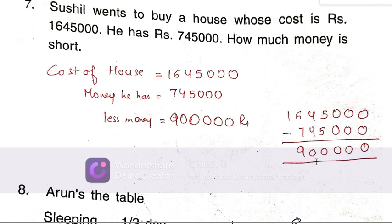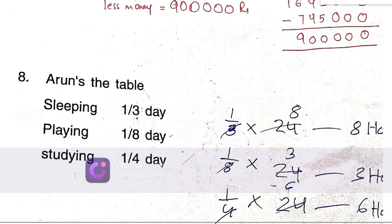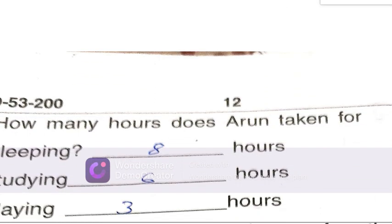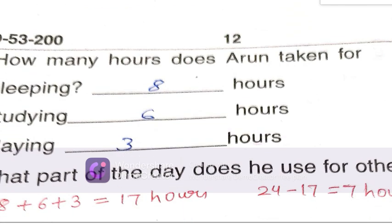Arun's table: sleeping 1/3 day, 1 times 3 equals 8 hours. Playing 1/8 day equals 3 hours. Studying 1/4 day equals 6 hours. So 8 plus 3 plus 6. I hope you will practice this paper well and get good marks. Thank you.